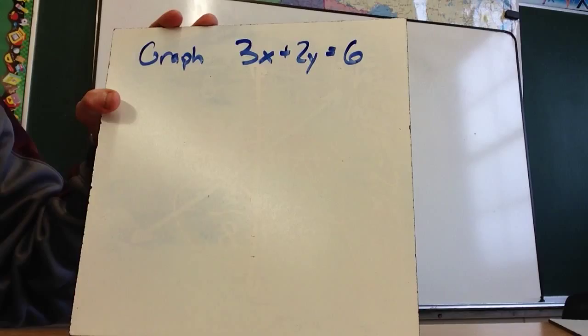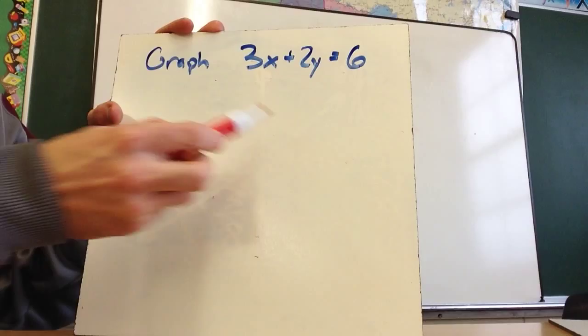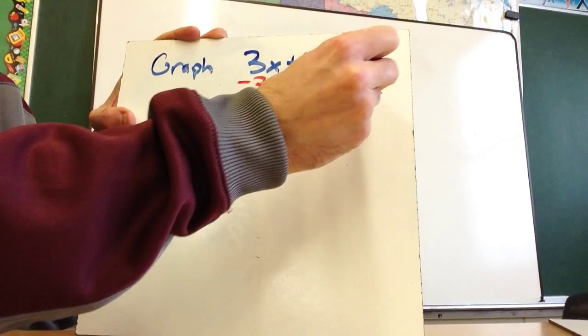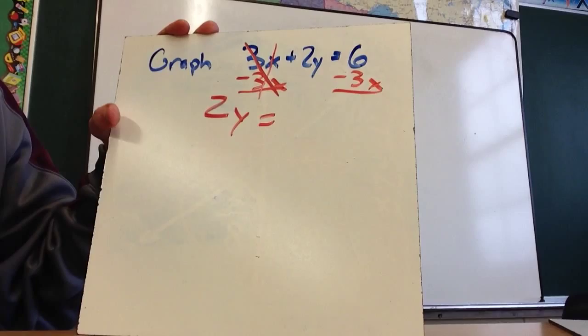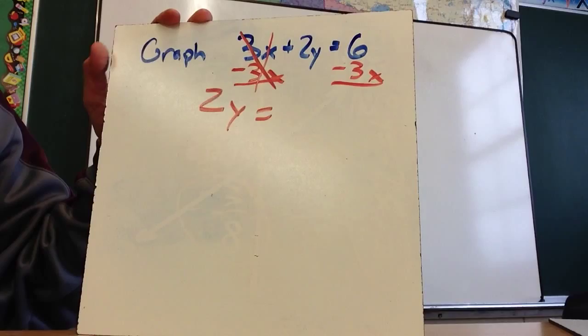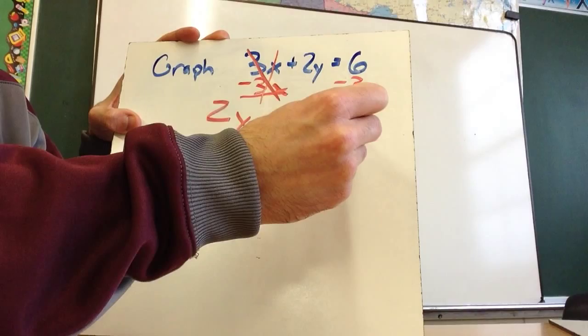So the idea of what I want to work on today is getting this into y equals mx plus b. So what I need to do is get the y by itself on the left side, and then everything else is going to be on the right. So in order to do that, I'm going to subtract 3x from both sides. Now when I subtract 3x from this side, this will go away, obviously, and I'll be left with 2y equals. And then keep in mind, I cannot subtract 6 minus 3x. That does not equal 3x. And so what I'm going to do is I'm going to write negative 3x plus 6.